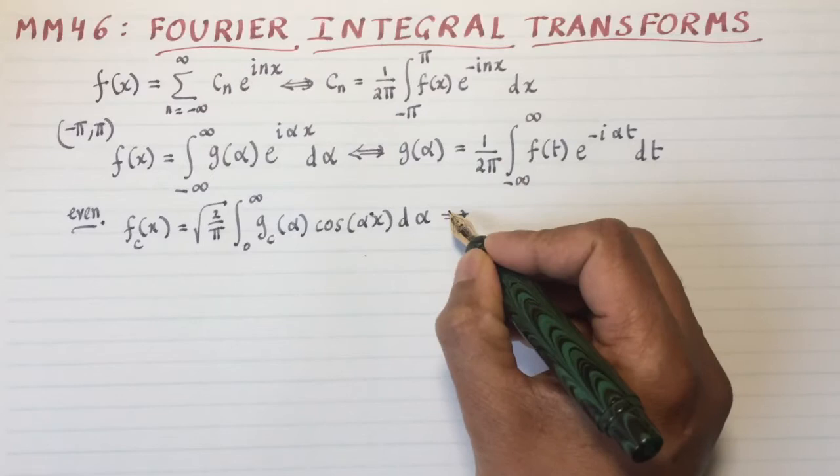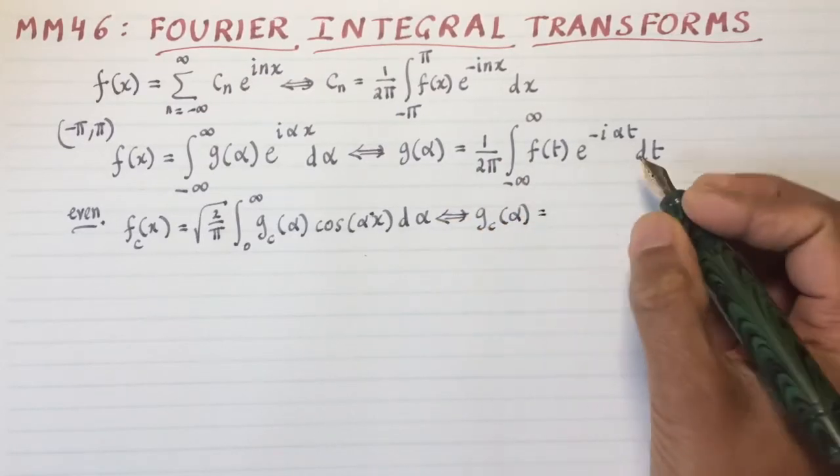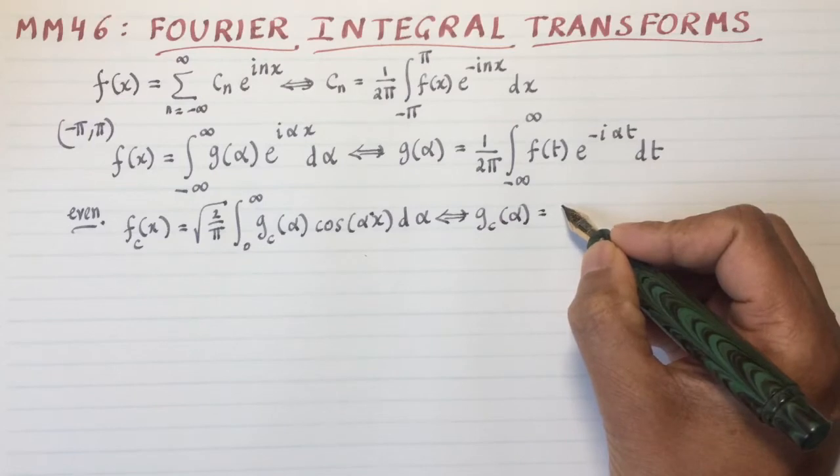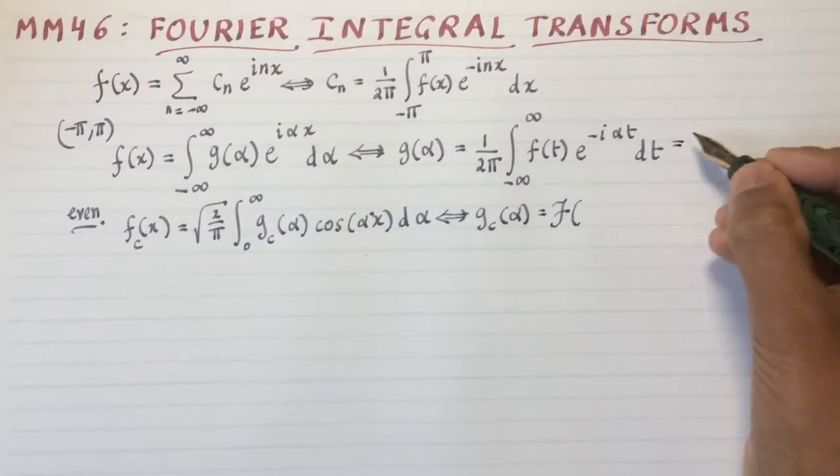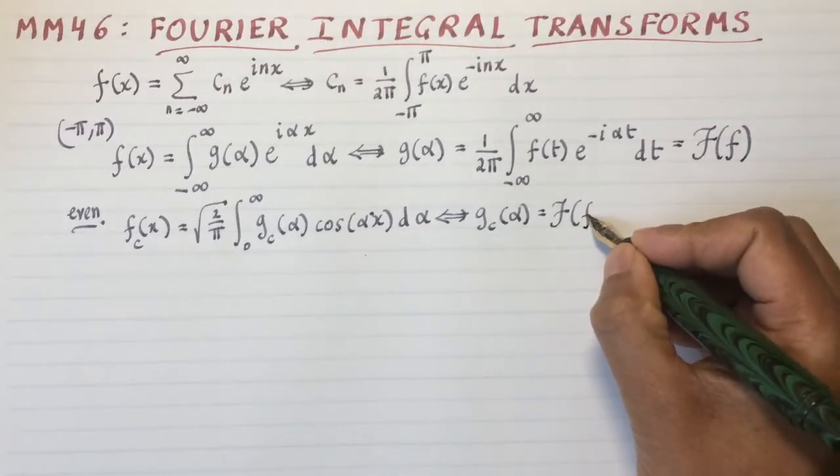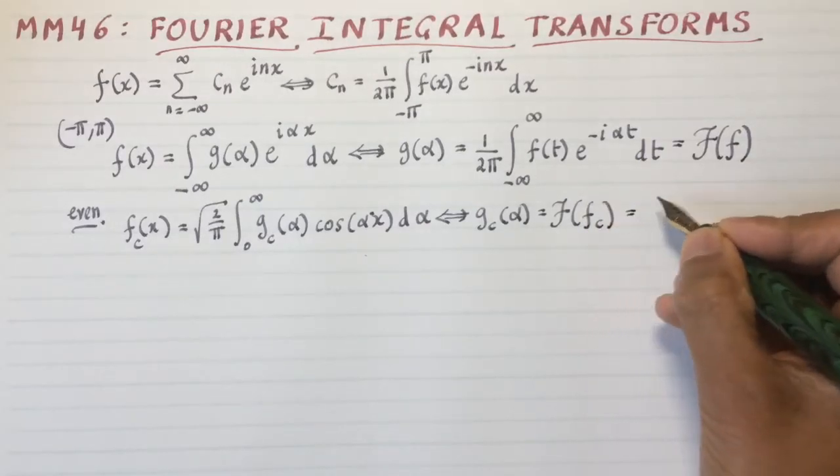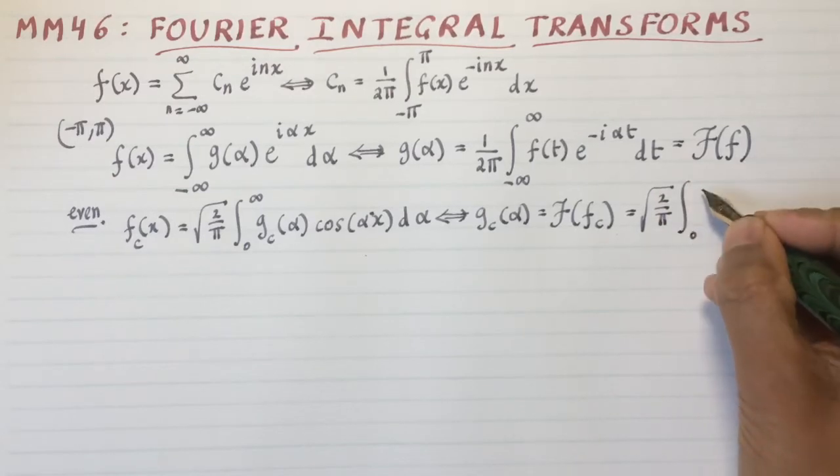And the corresponding coefficients gc alpha are got by reverse transforming it. By the way, I should have written this as the Fourier integral transform of f. So this would be the integral transform of fc. And that would be the square root of 2 over pi again, integral from 0 to infinity.